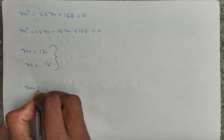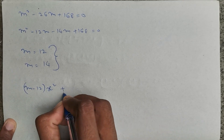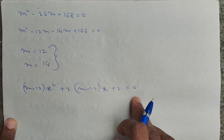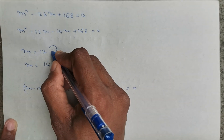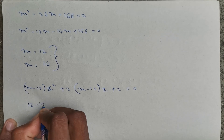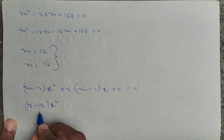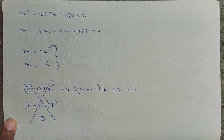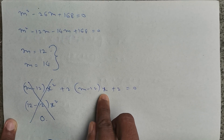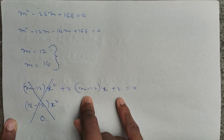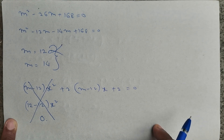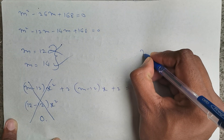The values of m are 12 or 14. But the original equation is (m minus 12)x² plus 2(m minus 12)x plus 2 equals 0. If we take m equals 12, substituting gives 12 minus 12 equals 0, making the x² term disappear. This means only the x term remains, making it a linear equation. But the question specifies a quadratic equation, so m equals 12 is not valid. Therefore m equals 14.